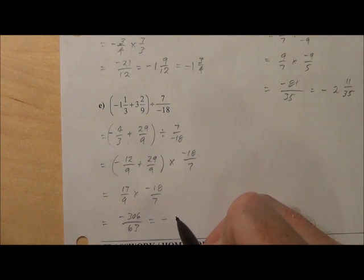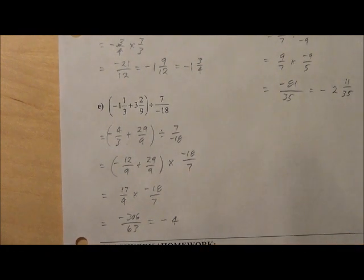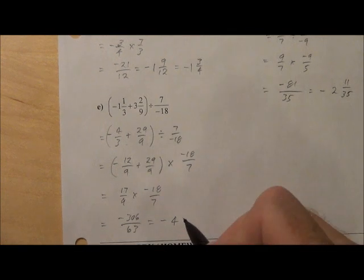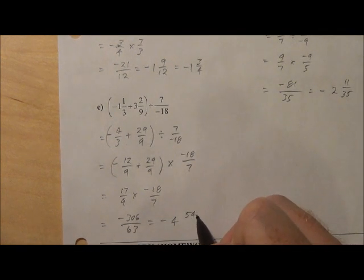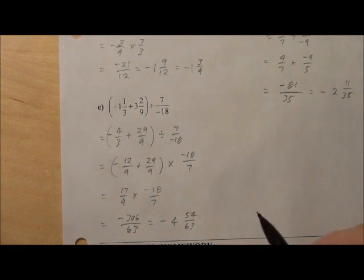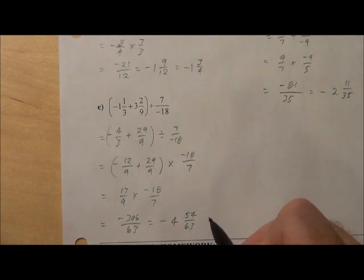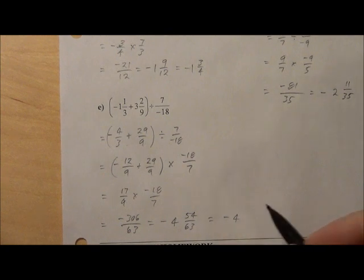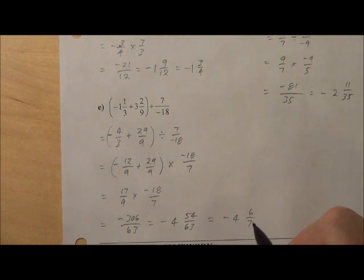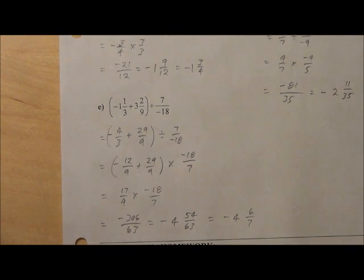And then we're going to simplify. So negative 4 and 54 sixty-thirds. And I believe, if I'm not mistaken, 9 goes into both of those. So negative 4 and 6 sevenths would be the final answer.